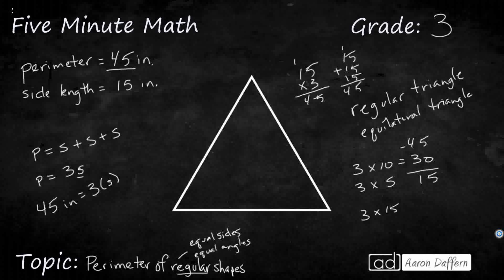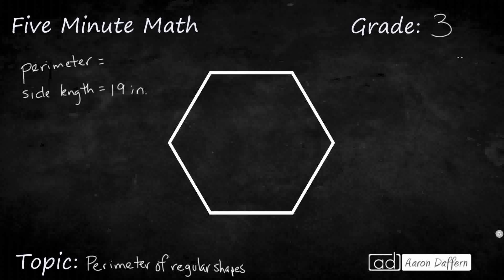Let's look at another example. This is a regular hexagon. It doesn't have a specific name like an equilateral triangle or a square — this is just a regular hexagon. This is going to be a little bit simpler because we actually have the side length here: 19 inches.